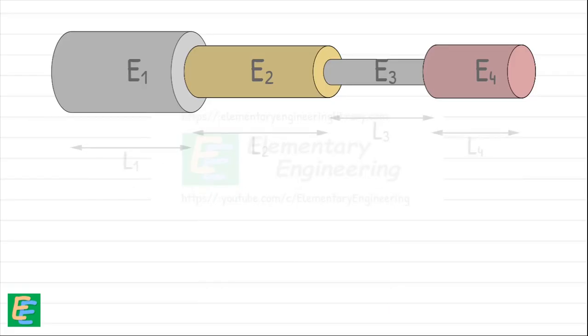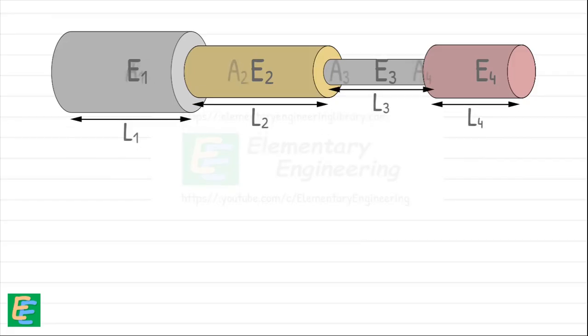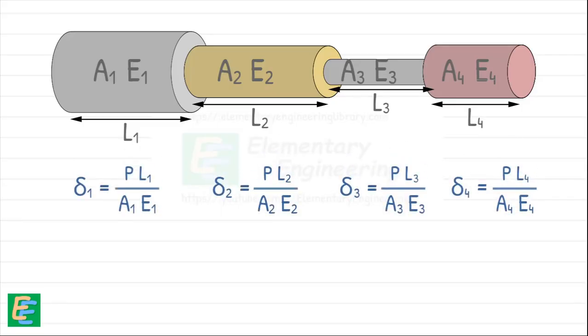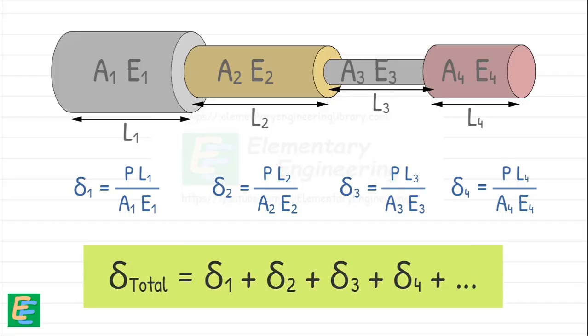Each segment will have its own length, cross-sectional area, and possibly material properties. For each segment, we calculate the deformation as this. And the total deformation of the entire bar is simply the sum of all segment deformations.